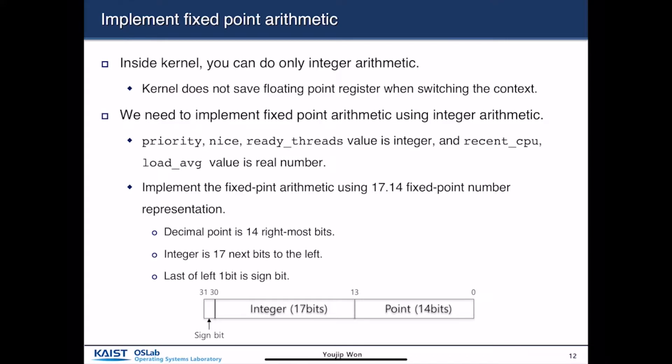There is one important thing to implement: fixed-point arithmetic. The reason is that inside a kernel, you can only do integer arithmetic. The kernel does not have a safe floating-point register when switching threads or switching context. So you need to implement fixed-point arithmetic using integer arithmetic.